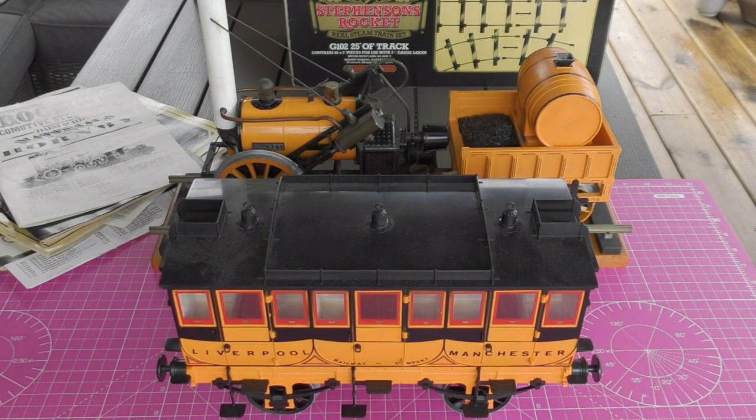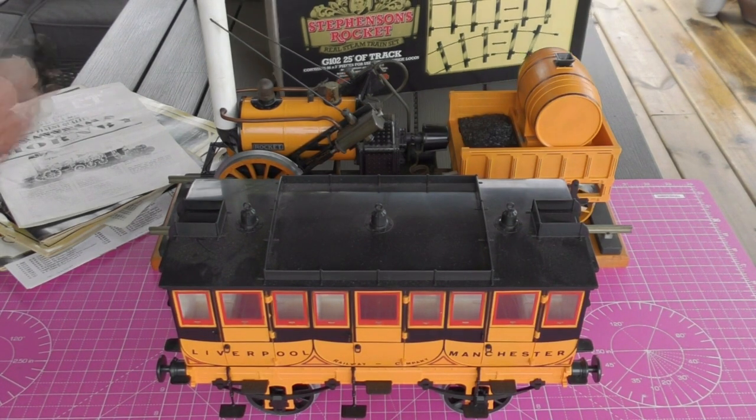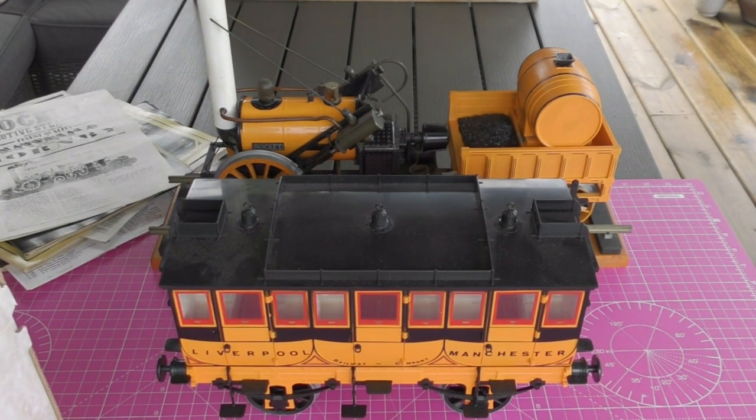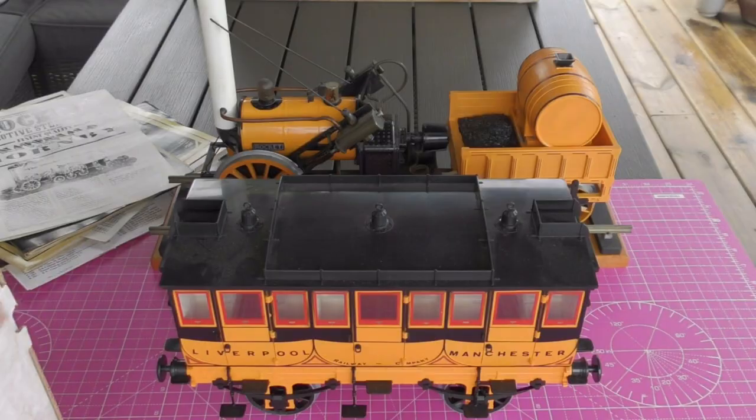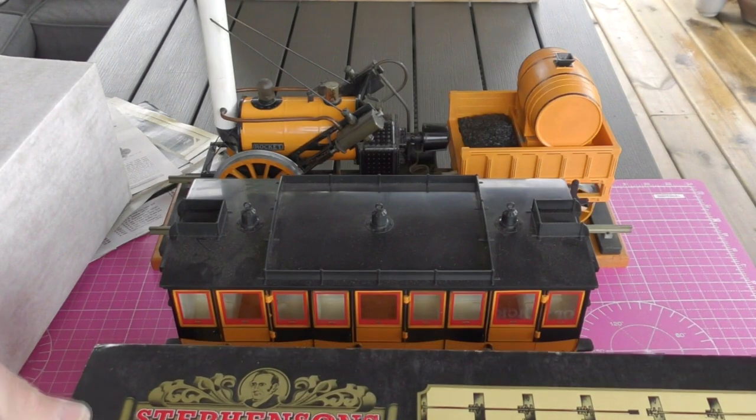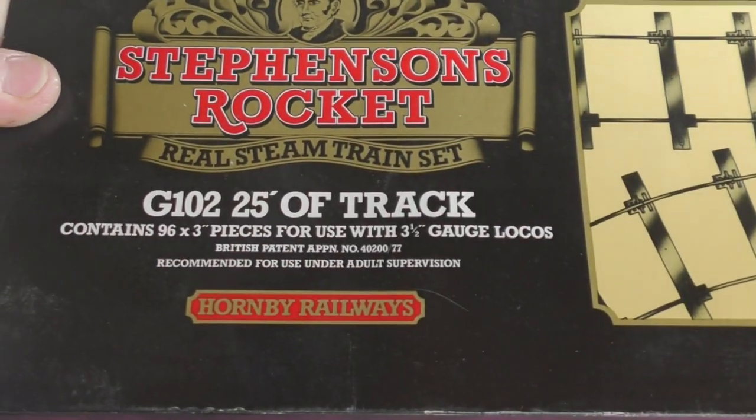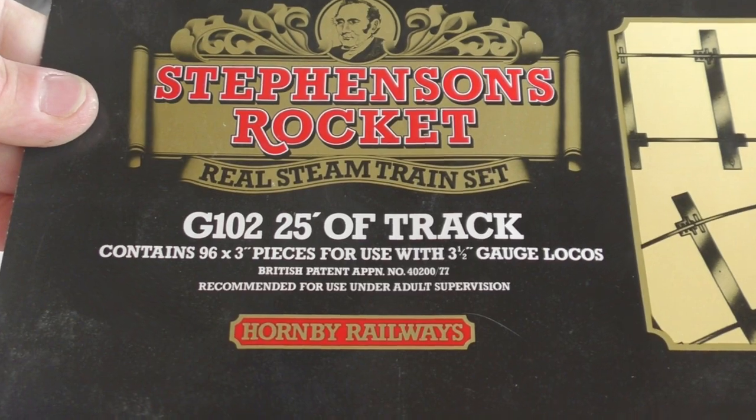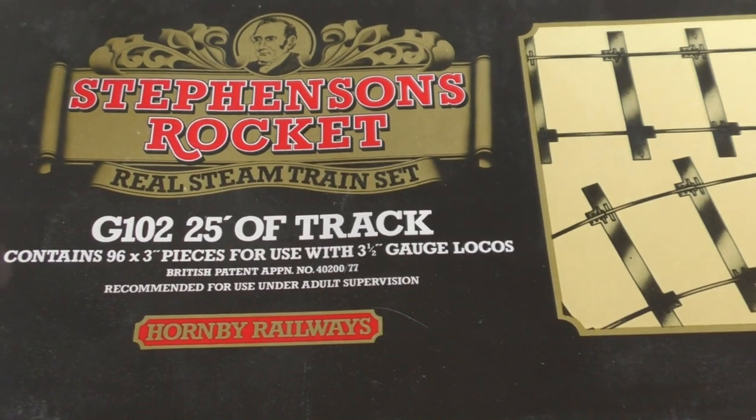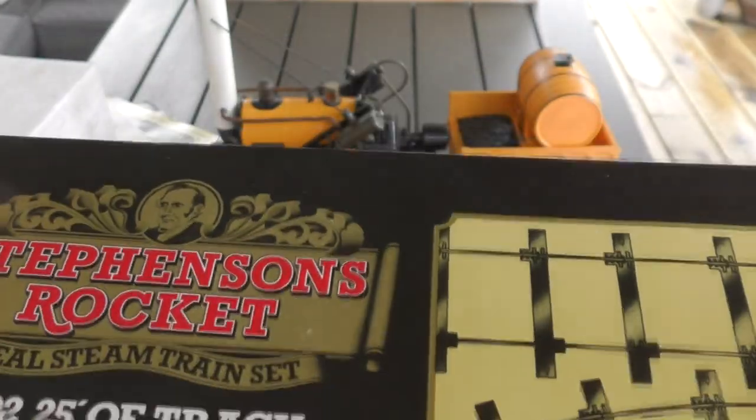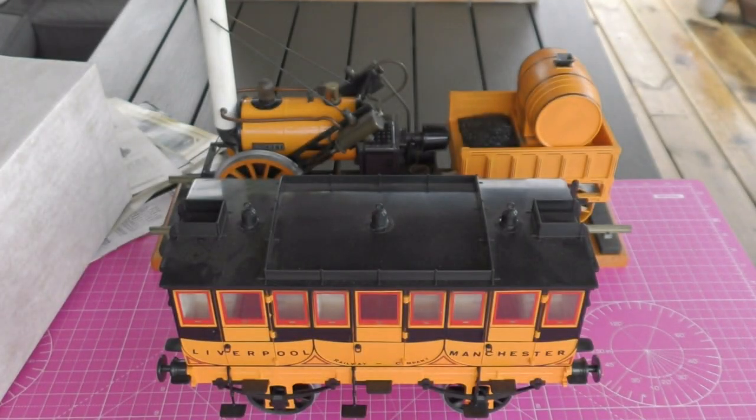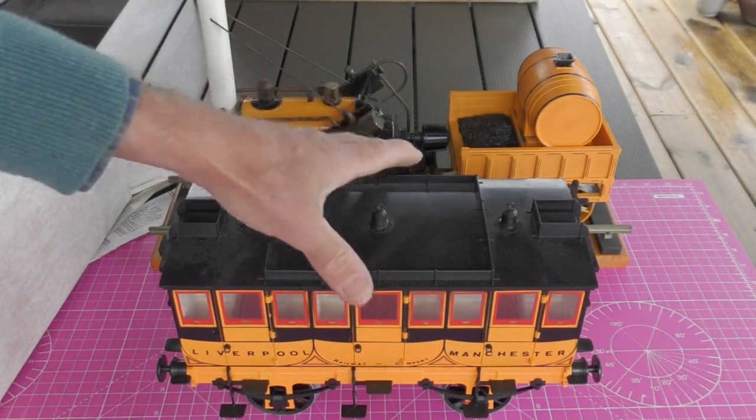Let's take a look at the next box. I'm just going to slip the outer cover off, I will show it to you briefly. G102, 25 feet of track, 96 pieces, the three and a half inch gauge track. It's an interesting design this track, we'll take a look at it.